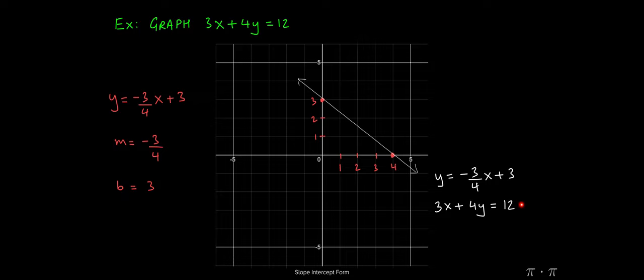They still represent the same line. You can think of these as nicknames. So the name of the line might be y equals negative 3 over 4x plus 3, but its friends might call it 3x plus 4y equals 12.